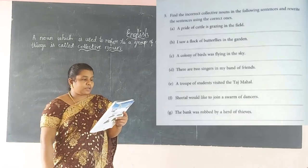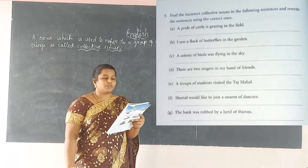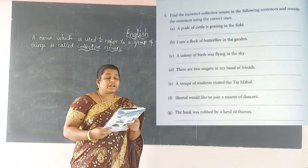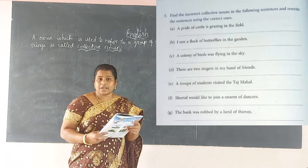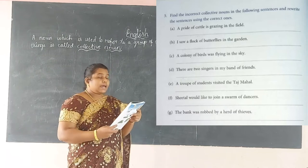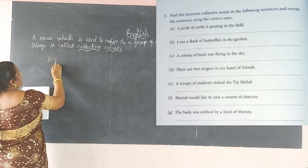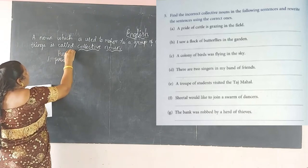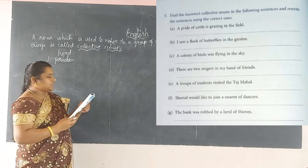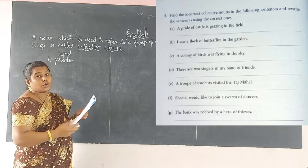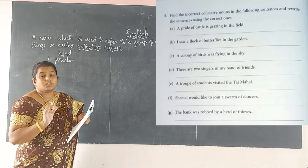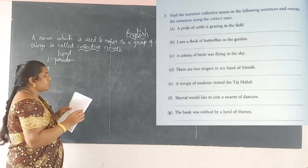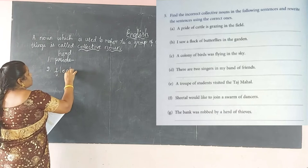Now let me move to page number four: find the incorrect collective nouns in the following sentences and rewrite using the correct ones. First: 'a pride of cattle' — we cannot say 'pride of cattle'; it should be 'a herd of cattle,' so cut out 'pride' and write 'herd.' Second: 'I saw a flock of butterflies' — 'flock' is used for birds only; for butterflies we use 'swarm,' so write 'swarm.'